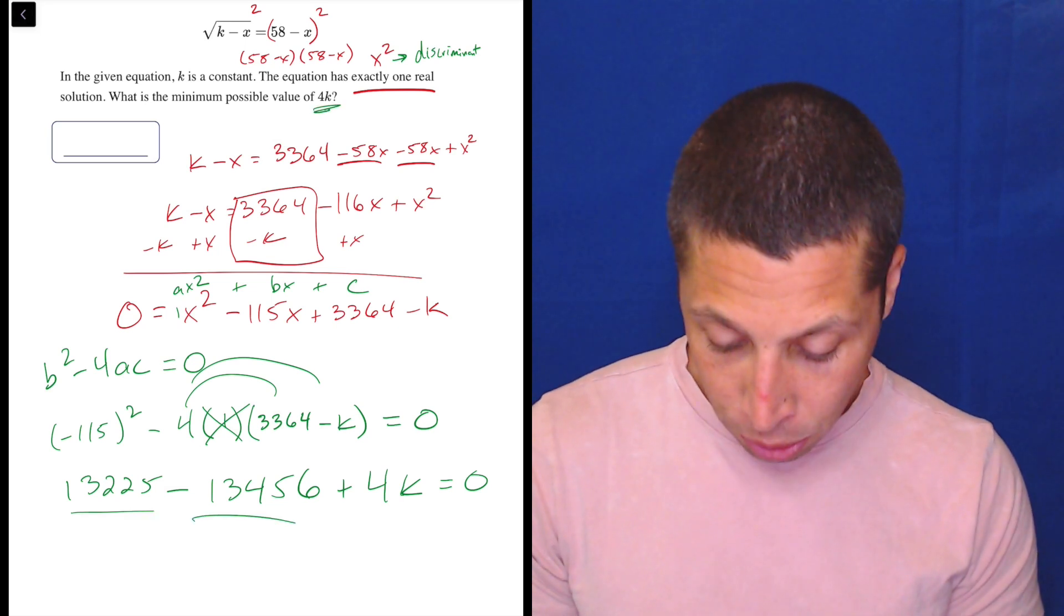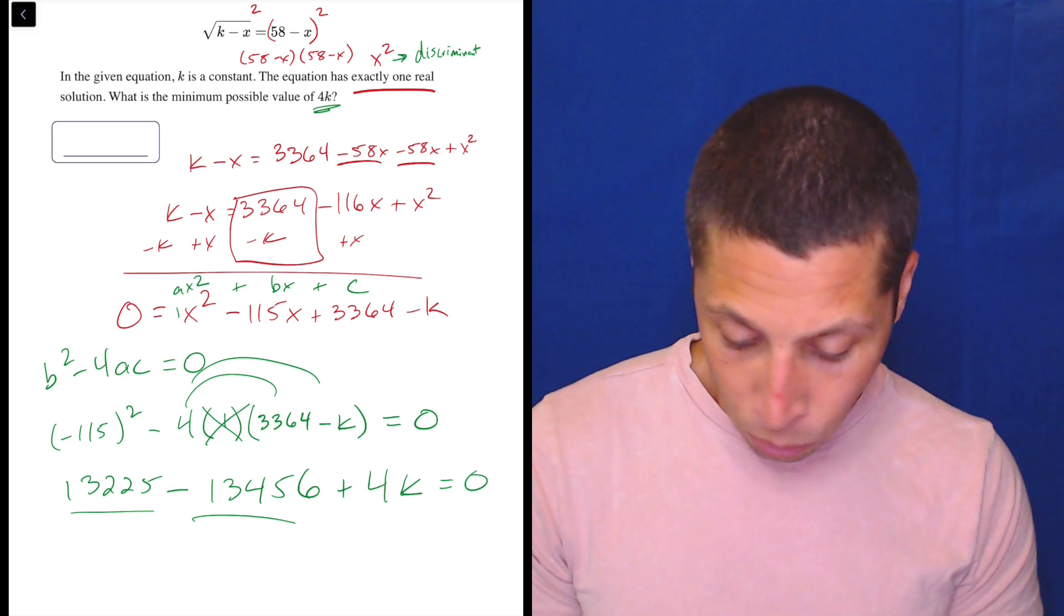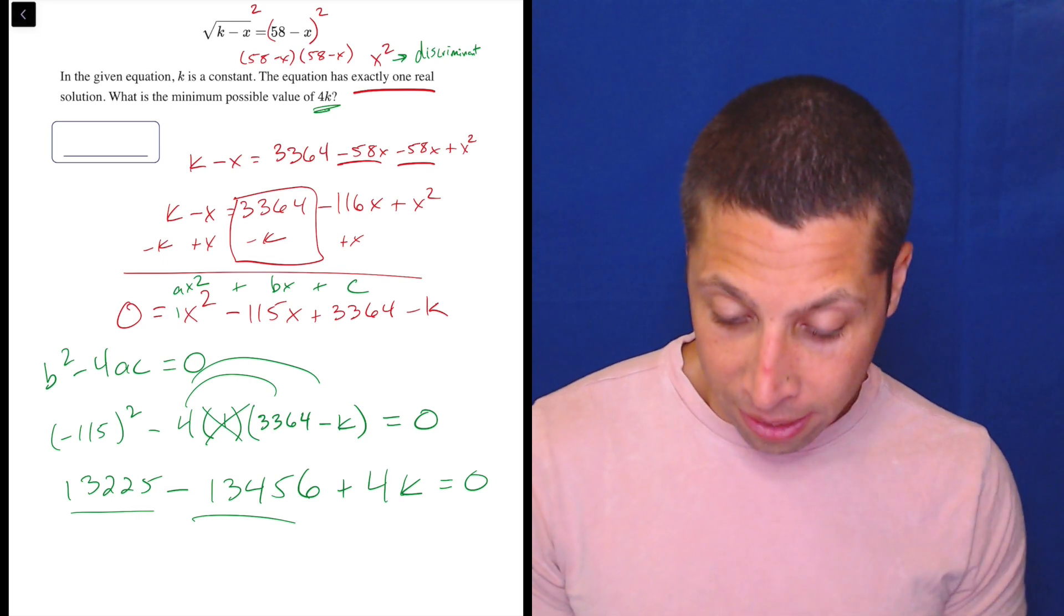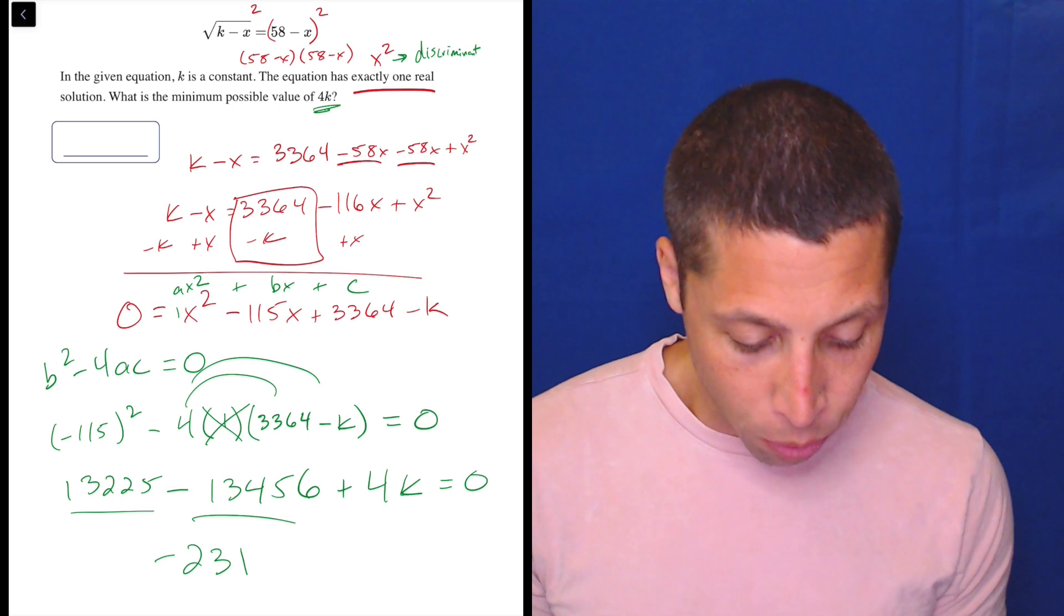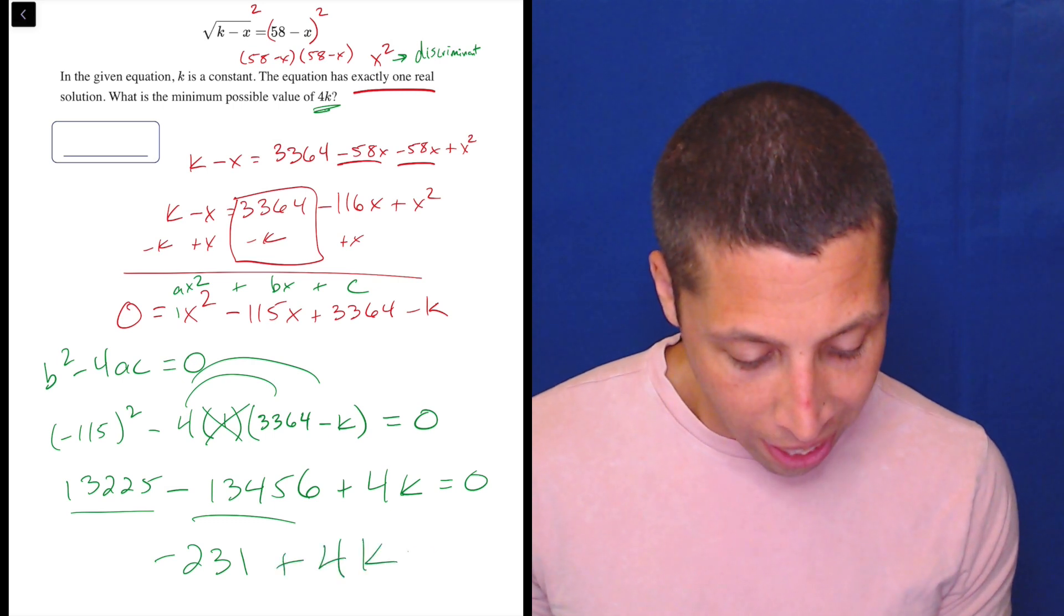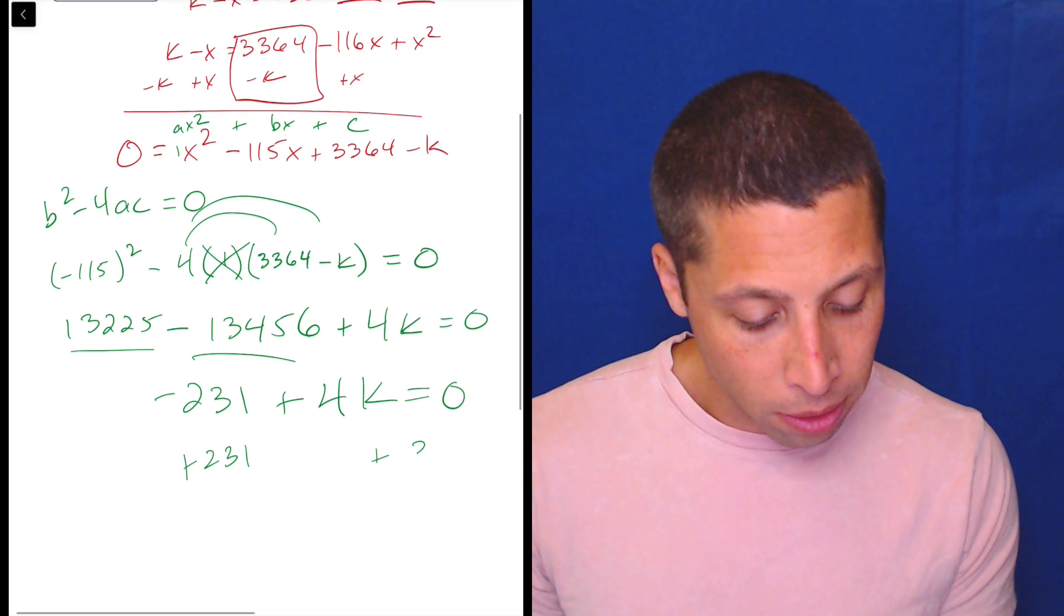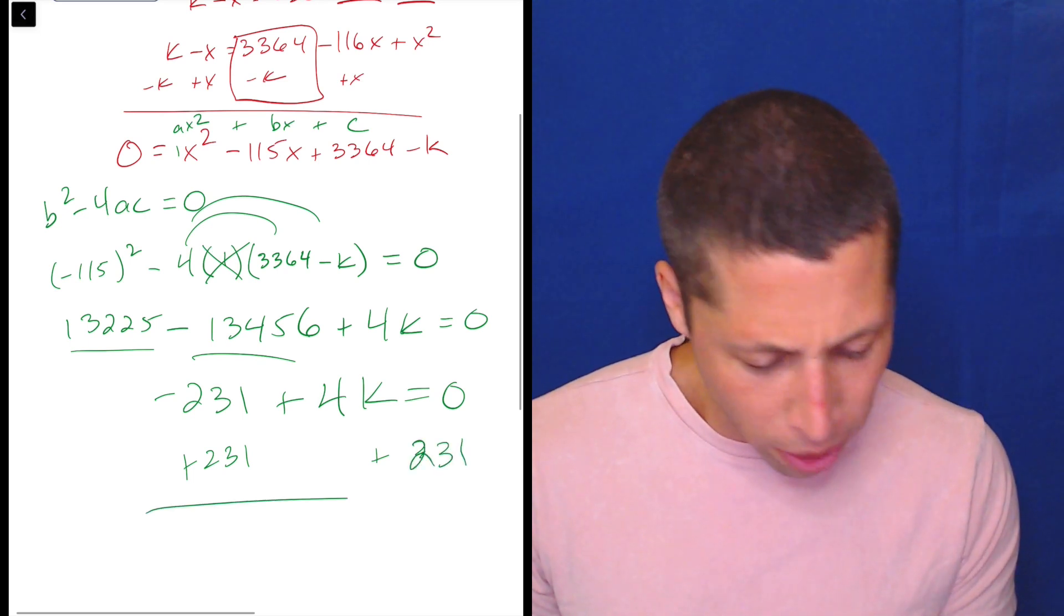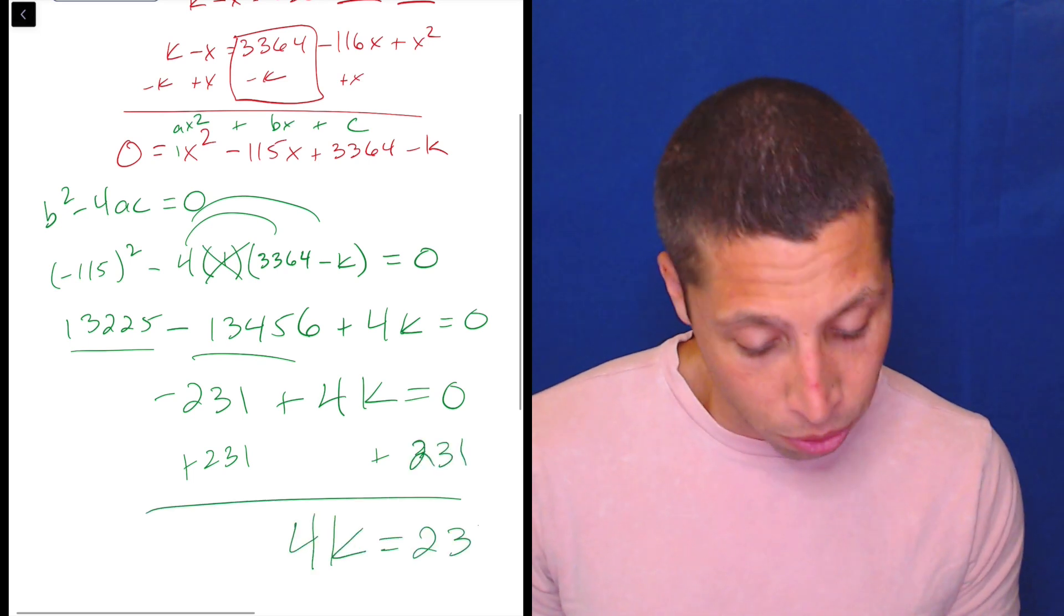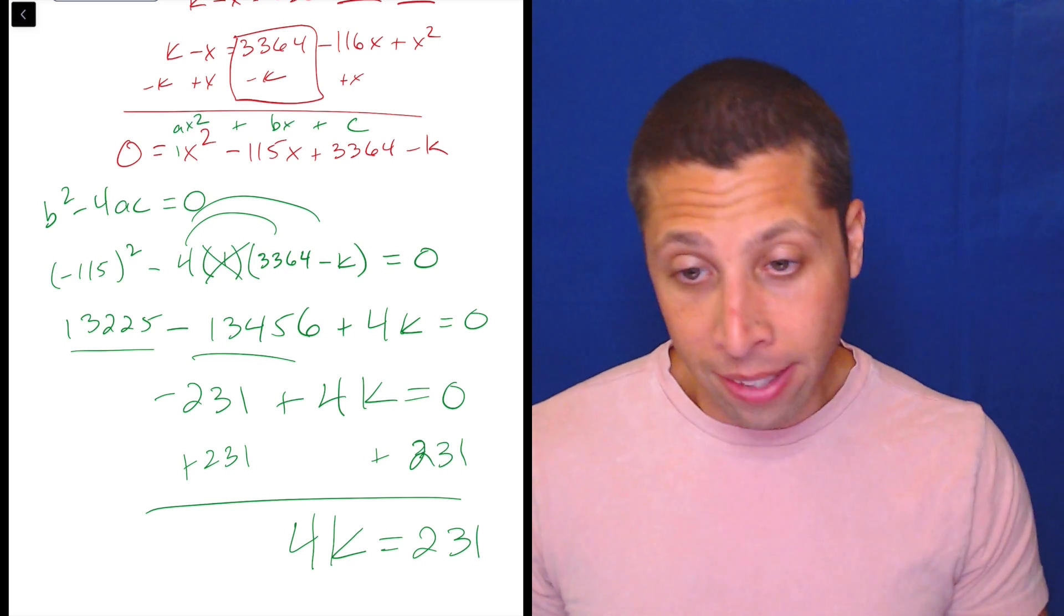So now we just combine these numbers. So 13,225 minus 13,456 is negative 231 plus 4k is equal to 0. So let's add that 231 over, and we get 4k is equal to 231. And that is the answer. So you're done.